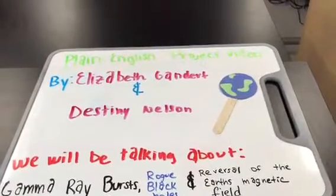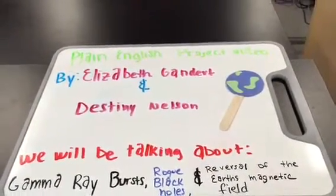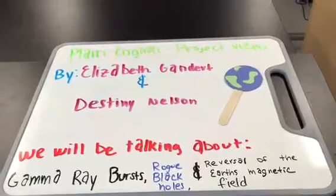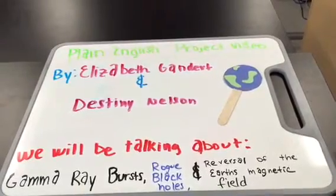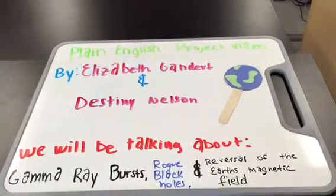This is our Planet English Project video by Elizabeth and Destiny. We will be talking about gamma ray bursts, black holes, and the reversal of the Earth's magnetic field.